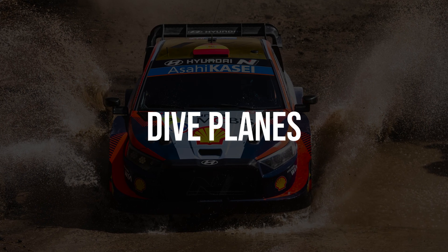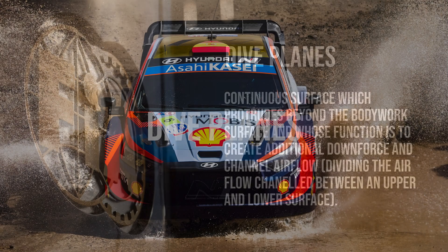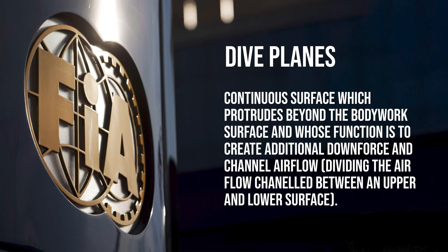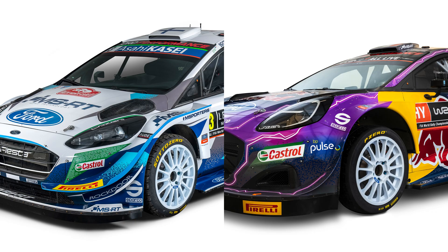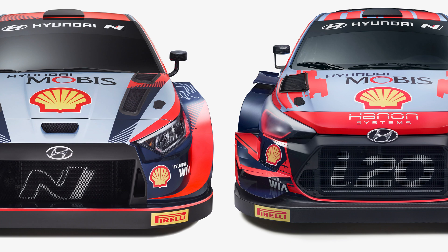Number three: dive planes. The regulations spell out dive planes as a continuous surface that protrudes beyond the bodywork surface. Their function is to create additional downforce and direct airflow by dividing and channeling it between the upper and lower surfaces. Dive planes were one of the most prominent aerodynamic features on the previous generation of WRC cars. They were banned with the new regulations of the Rally 1 car, which is why you don't see them these days. Because of that, it's interesting that they even mention them in the latest version of the regulations.